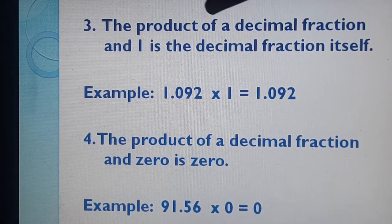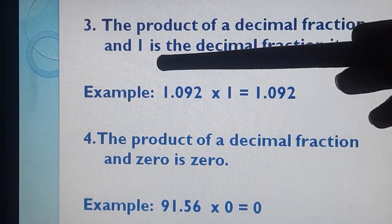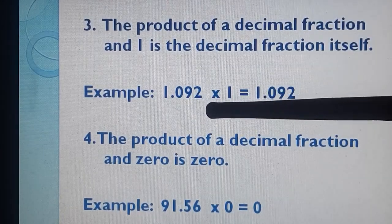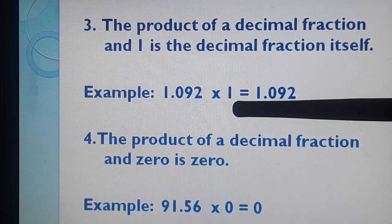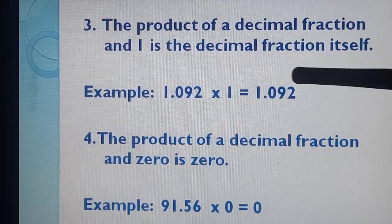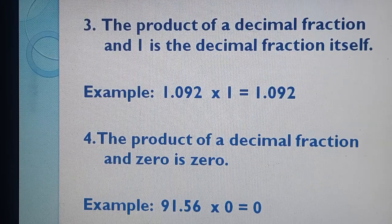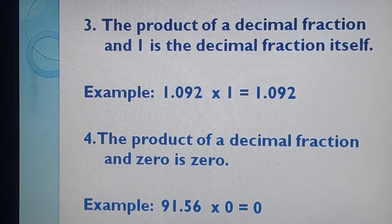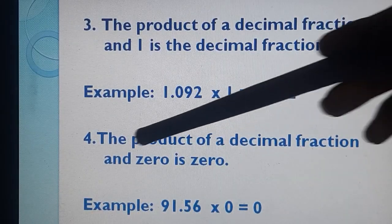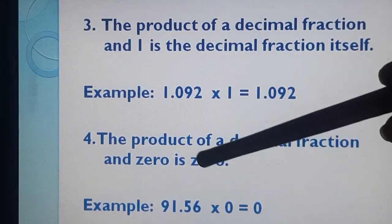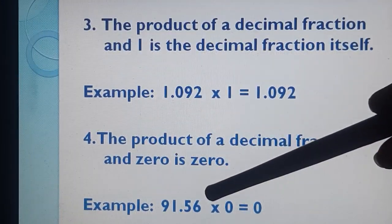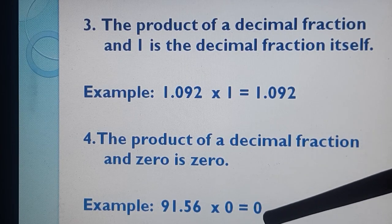Third property: the product of a decimal fraction and 1 is the decimal fraction itself. For example, 1.092 × 1 = 1.092 — that is the decimal fraction itself. Property number 4: the product of a decimal fraction and 0 is 0. When we multiply 0 with a decimal fraction, our answer will be 0. So 91.56 × 0 = 0.